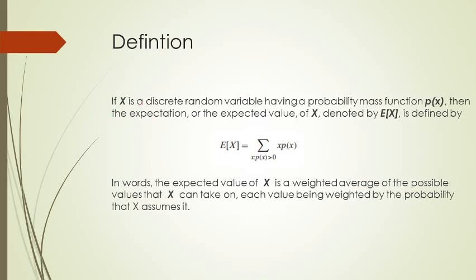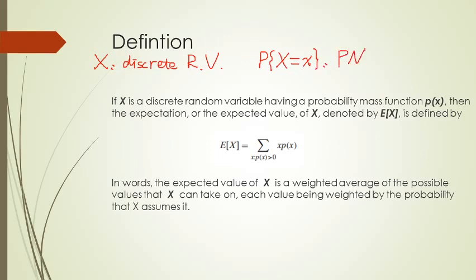We have already established that capital X is a discrete random variable, and we know the probability when X equals some small x — that is the PMF, the probability mass function. We also checked the CDF. The CDF for discrete random variables is a stepwise function. Now, how can we calculate the expected value or expectation for the random variable X?